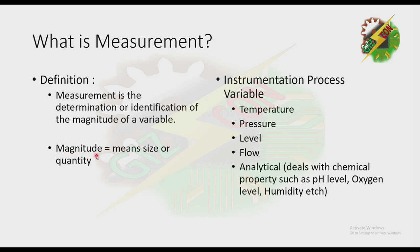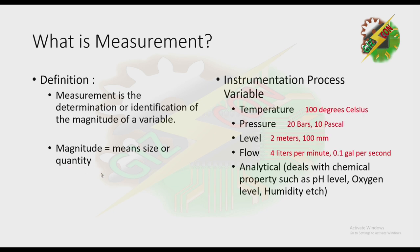Magnitude means it is the size or the quantity. For example, in temperature we have 100 degrees Celsius — 100 here is the magnitude and degrees Celsius is the unit. For pressure, we have 20 bars — 20 here is the magnitude and bars is the unit. We also have 10 Pascal — 10 here is the magnitude and Pascal is the unit.